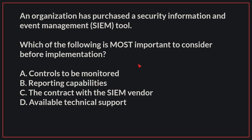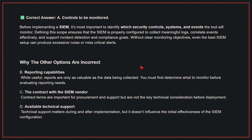An organization has purchased a security information and event management (SIEM) tool. Which of the following is most important to consider before implementation? The correct answer is A: controls to be monitored. Before implementing a SIEM, it's most important to identify which security controls, systems, and events the tool will monitor. Defining this scope ensures that the SIEM is properly configured to collect meaningful logs, correlate events effectively, and support incident detection and compliance goals. Without clear monitoring objectives, even the best SIEM setup can produce excessive noise or miss critical alerts.